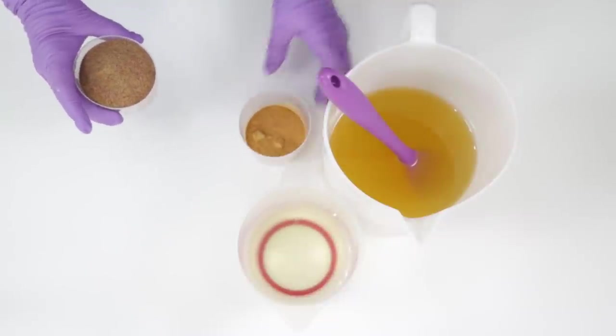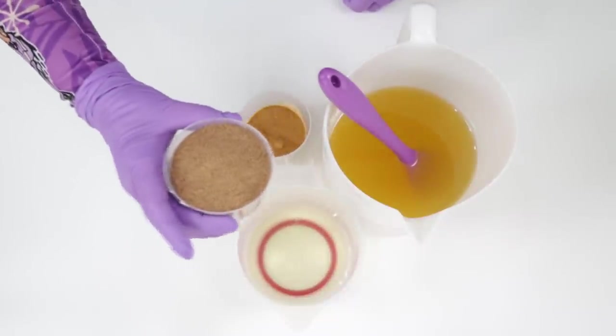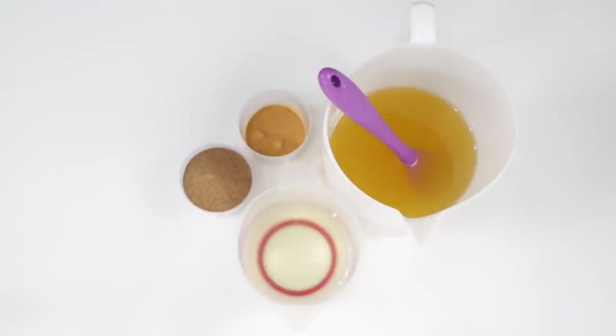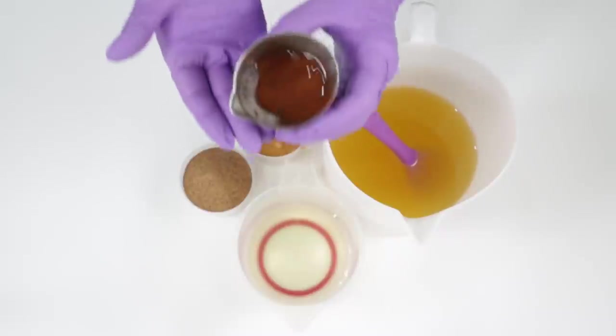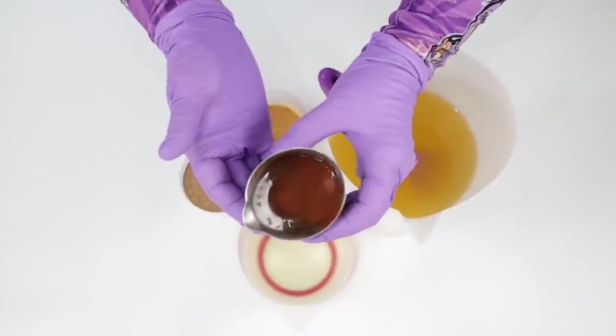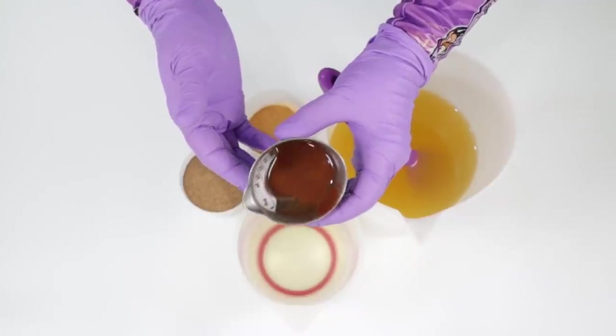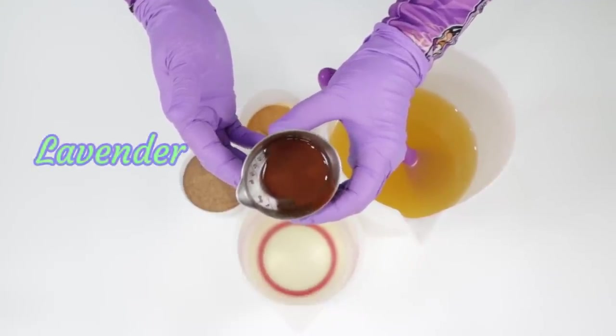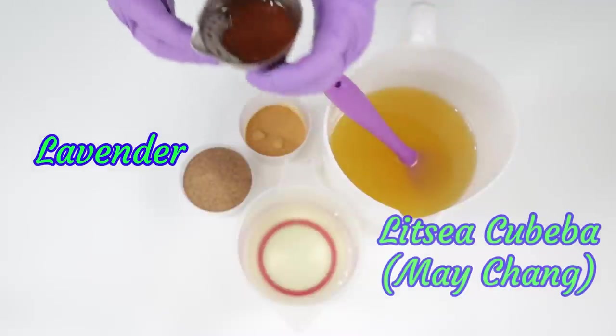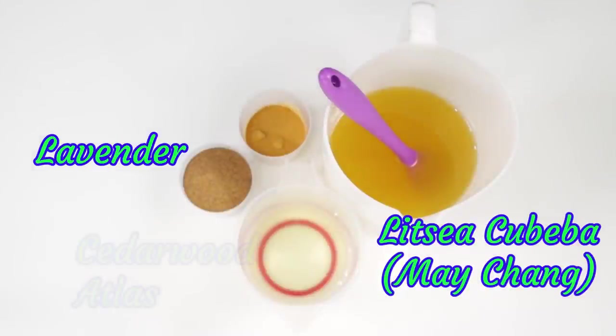So I've measured out my oils and my lye and I've also worked out how much of the rose hip powder and the apricot seeds that I want to use. I'm going to be fragrancing this with an essential oil blend so I've got a combination of lavender, Litsi Kubea which is the same as Mei Chang and some Cedarwood Atlas.